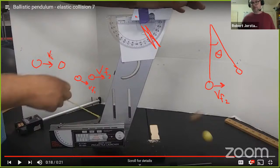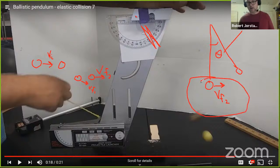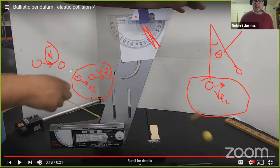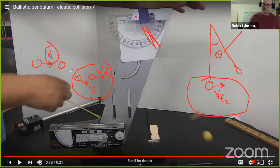Actually we often run it in reverse — we know the angle, so that helps us figure out the initial speed of the ball. We know the masses of the balls, so we can figure out the speed of this one, and you could figure out how fast a bullet comes out of a gun this way.